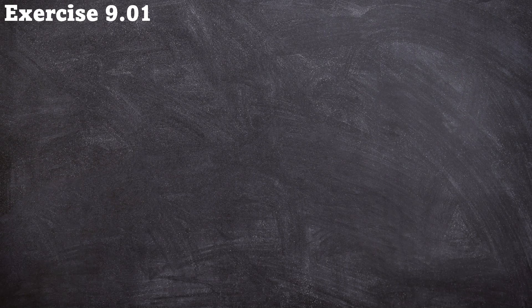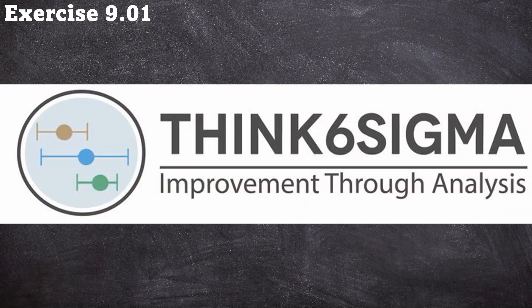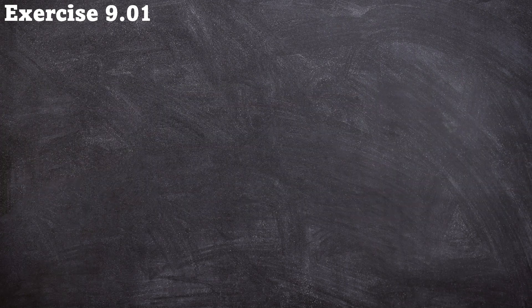So if you want to work along with the video you can download the data sets from RMK Six Sigma dot com. If you want to do the full Green Belt course on Minitab you can go to my new website Think Six Sigma dot com.